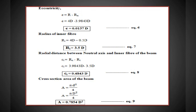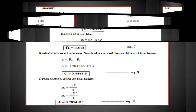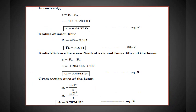Eccentricity e = R − Rn = 4D − 3.9843D = 0.0157D — equation 6. Radius at inner fiber: Ri = R − D/2 = 4D − 0.5D = 3.5D — equation 7. Radius at outer fiber: Ro = R + D/2 = 4D + 0.5D = 4.5D.